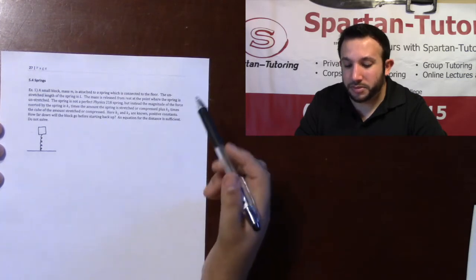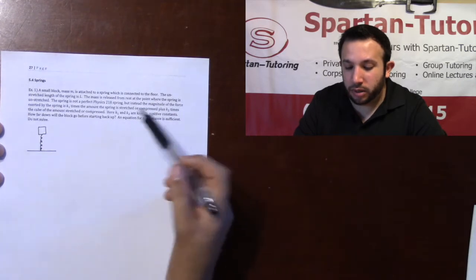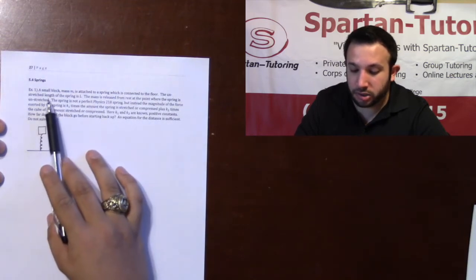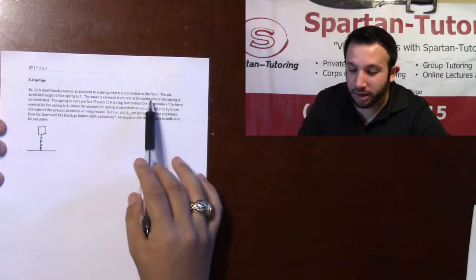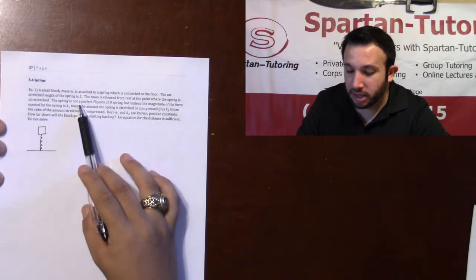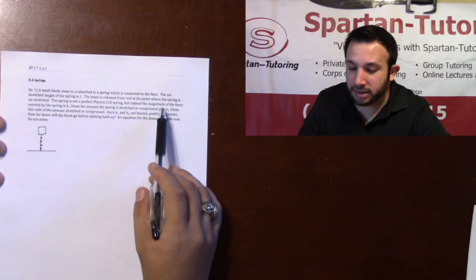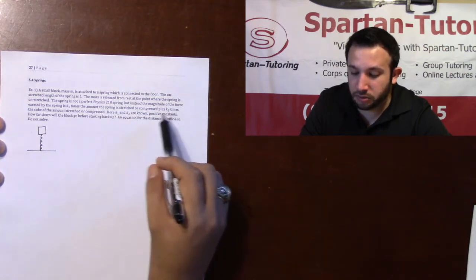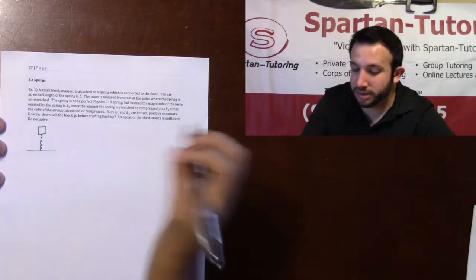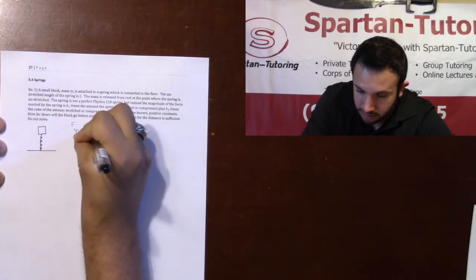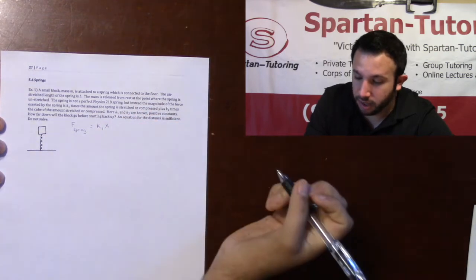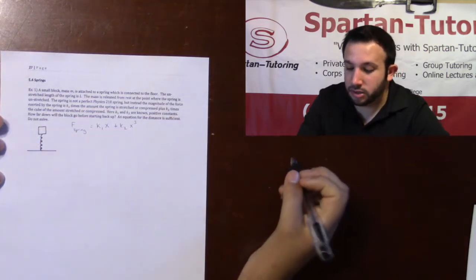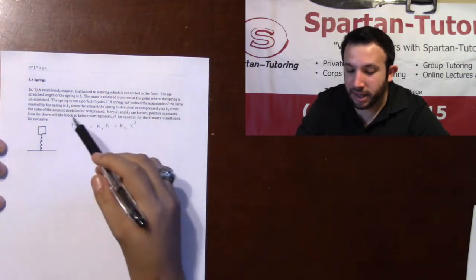Let's take a look at a couple of problems that deal with springs. In number one, a small block of mass m is attached to a spring connected to the floor. The unstretched length of the spring is l. The mass is released from rest at a point where the spring is unstretched. This is not a standard spring — the magnitude of the force is k1 times the amount the spring is stretched or compressed, plus k2 times the cube of that amount, where k1 and k2 are known positive constants.